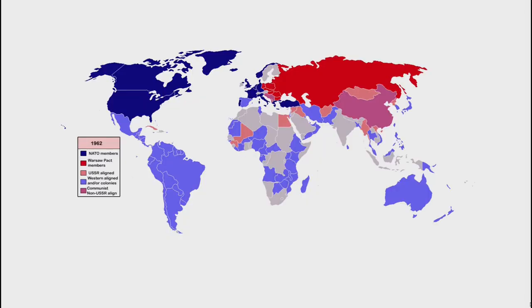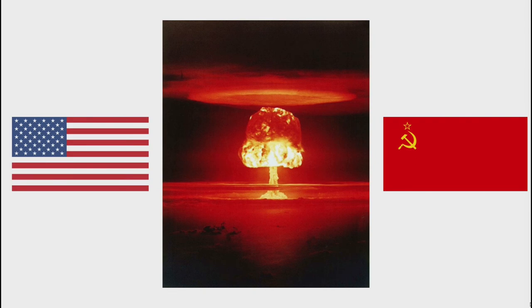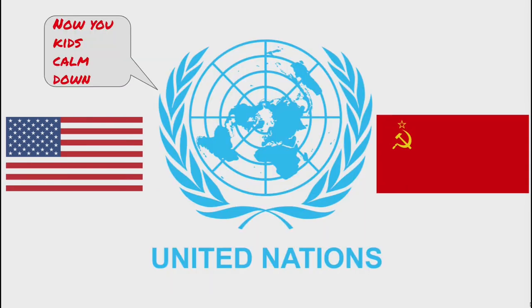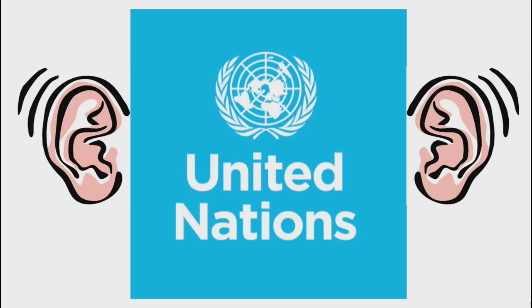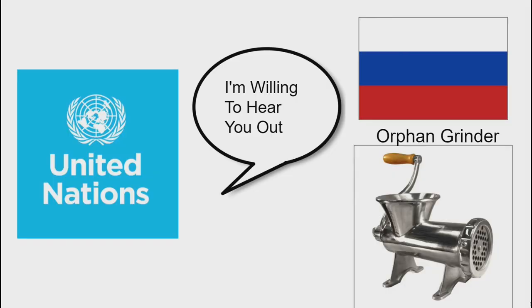After its founding, the UN was immediately thrust into the Cold War, where it would have to try and avoid the world's two new global superpowers from blowing everyone up. A trend that occurred during the Cold War was that the UN would act as a middle ground between the competing ideologies of communism and capitalism. While NATO, for example, was an organization made to suppress the spread of communism and the power of the USSR, the UN was an organization that would be willing to hear both sides and not dismiss one out of hand.